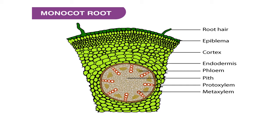So by taking a TS of monocot root, we can study its anatomy and clearly study the layers like epiblema, cortex, endodermis, and vascular bundles.